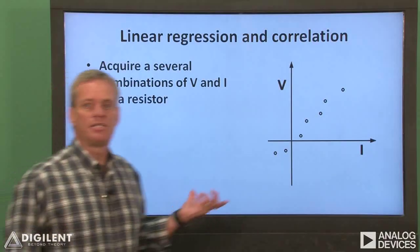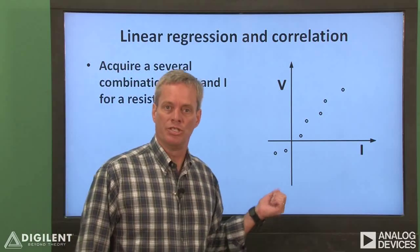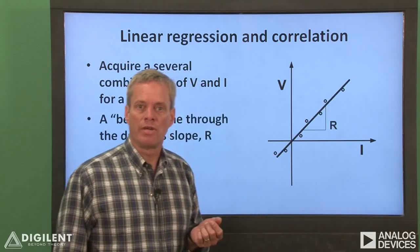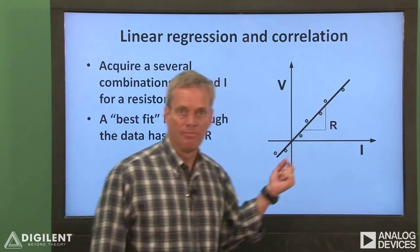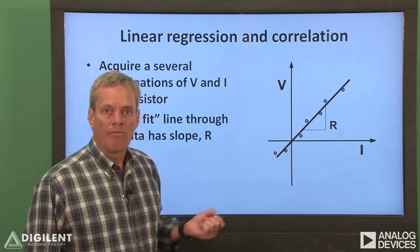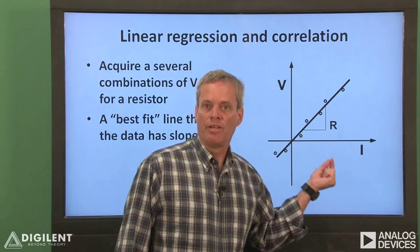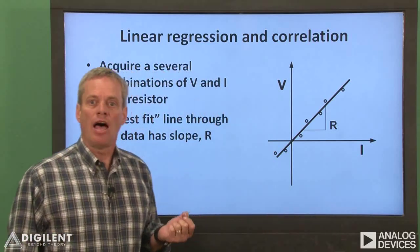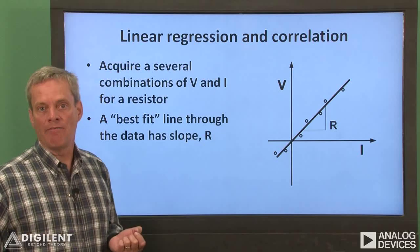In our previous example, we acquired only one piece of data from which to estimate a resistance — a single combination of voltage and current. Since errors can always creep in when we're acquiring data, any single data point is subject to an unknown amount of error. If we can acquire more combinations of voltage and current data for the resistor, we can be more certain about our confidence in the resistance estimate. Suppose we acquire a set of current data for various values of resistor voltage difference. We can plot this data and determine a best-fit straight line using linear regression techniques. The resulting best-fit line will have a slope R which reflects the least overall error among the various data points.